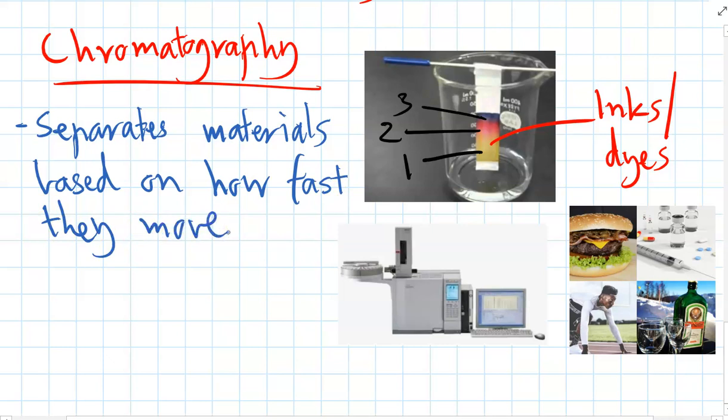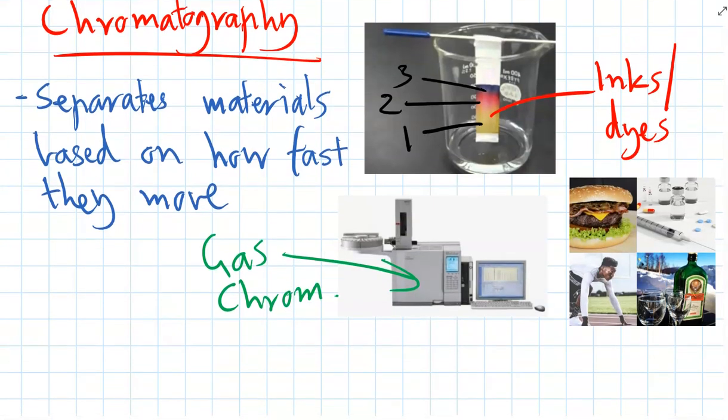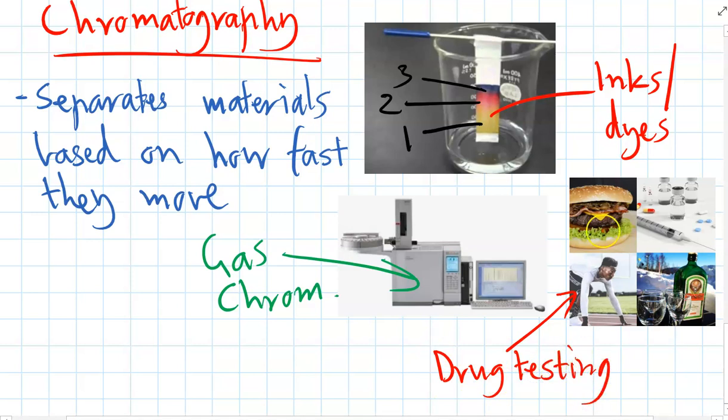So that's the simple method of chromatography but modern technology has big machines that use gas chromatography and these are really common in lots of different industries. Things like they can separate out drugs from blood samples and so chromatography is used for drug testing in sport and in the medical field too. It's also used in food and alcohol so that companies can test how much of a particular ingredient is in their food.